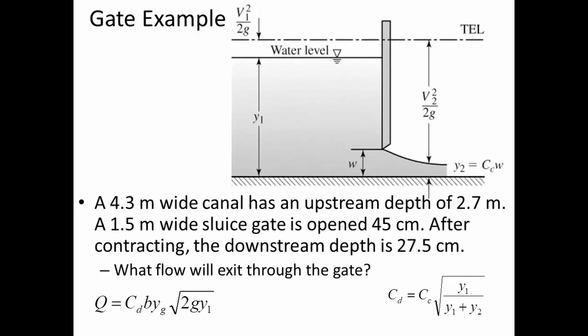Let's take a rectangular gate as an example. We know its width, the upstream depth, and the opening. Note that the canal may be 4.3 meters wide but the gate is only 1.5 meters wide, so be careful that the width B you choose in the underflow equation is the width of the gate. We have a 4.3-meter-wide canal with an upstream depth of 2.7 meters, a 1.5-meter-wide gate opened 45 centimeters. After contracting, the downstream depth is 27.5 centimeters.